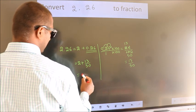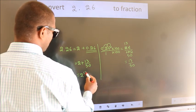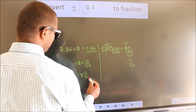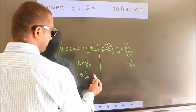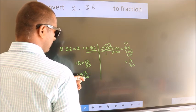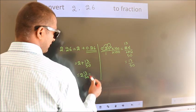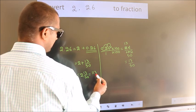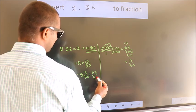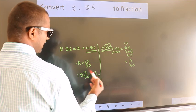In mixed fraction, it is 2 and 13 over 50. In improper fraction, it is 2 into 50, which is 100, plus 13, giving us 113 by 50 as our fraction.